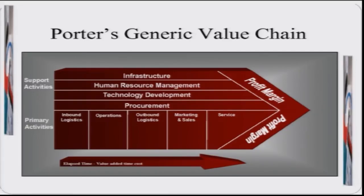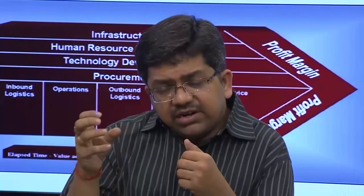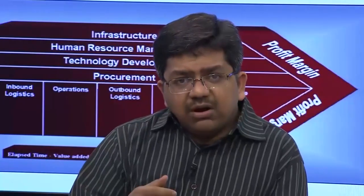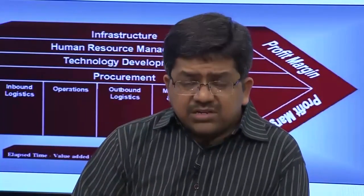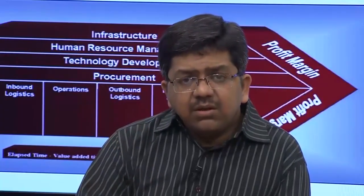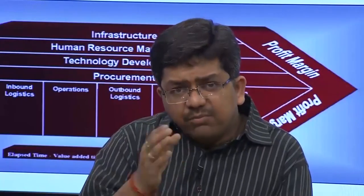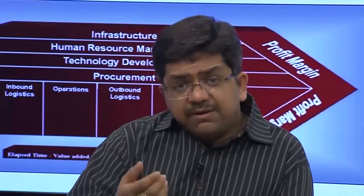The use of Porter's generic value chain is that as an organization, you identify the activities you perform while delivering value to customers, understand what customers want, and also identify the cost drivers of those activities and the interrelations between them. By doing this, you can identify which activities are unnecessary or can be removed, bringing down costs or improving certain activities so they improve the rest of the process.